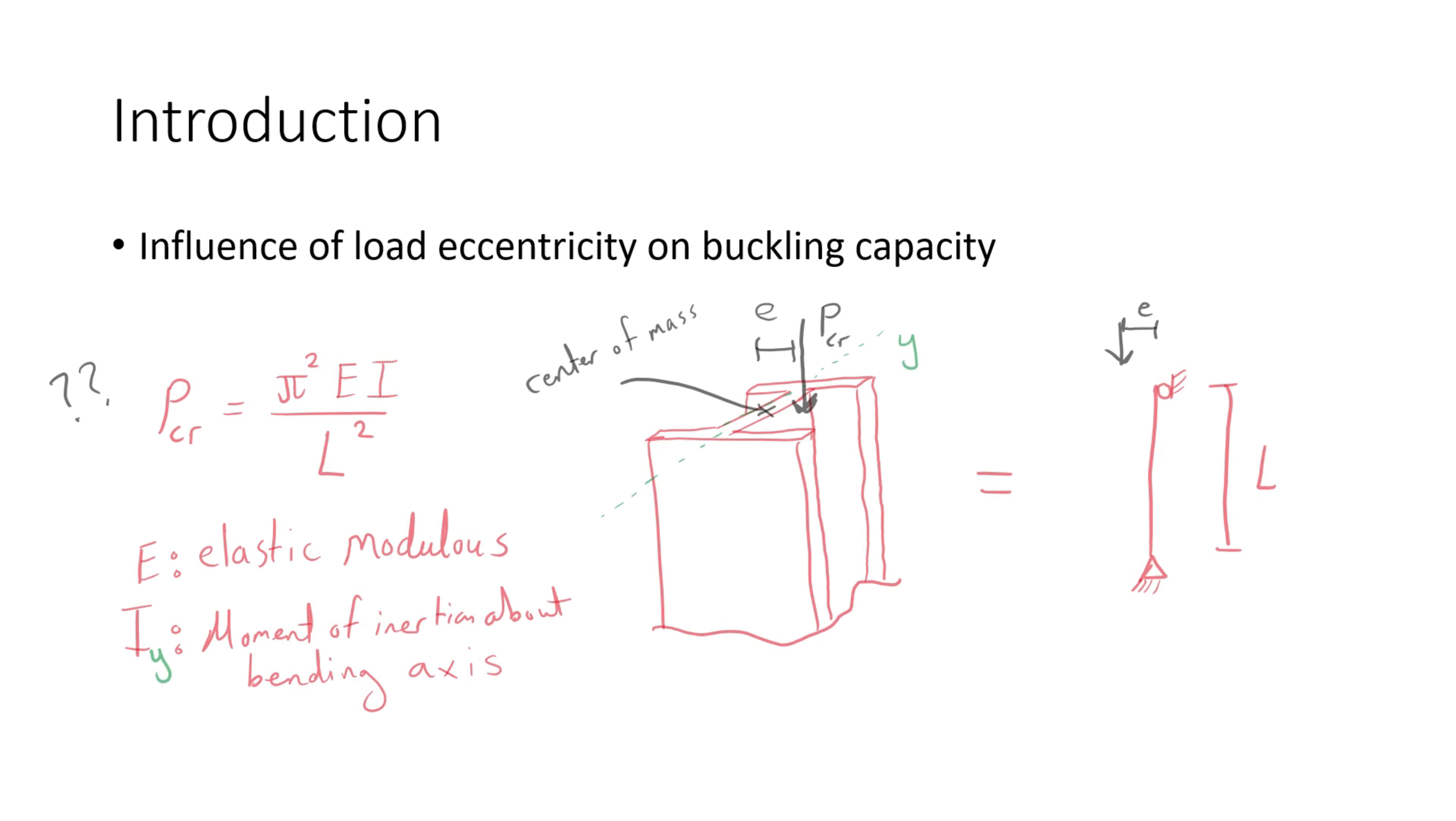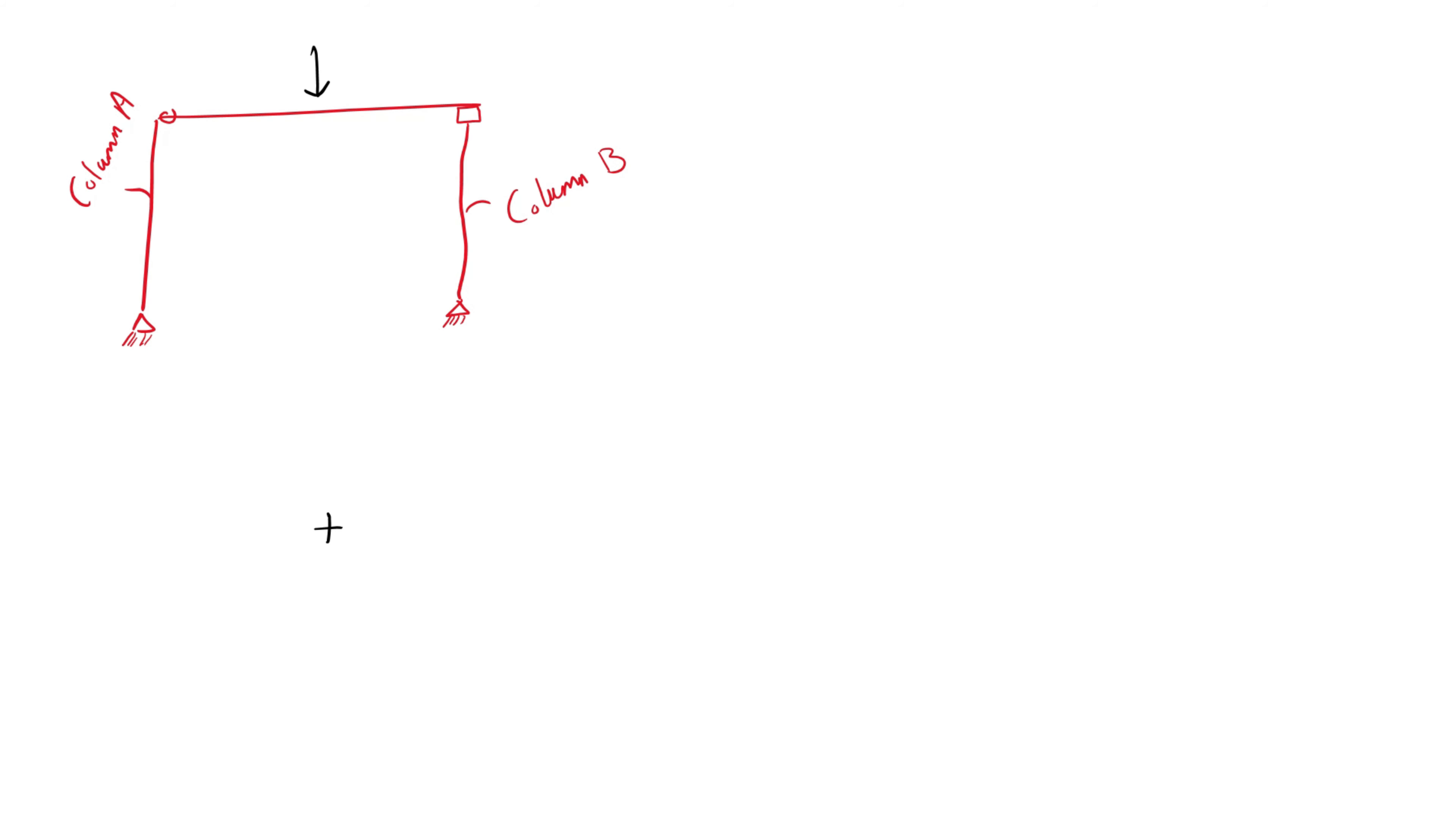We will explain the assumptions and idealizations involved with column theory. I'm also going to show how we can make sense of the Euler buckling by deriving it from the Euler-Bernoulli beam theory and visualizing it graphically.